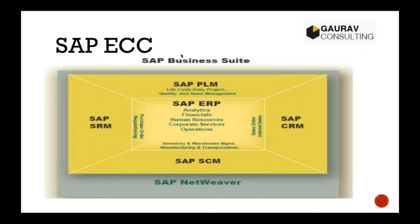SAP ERP is the central component consisting of core modules like MM, SD, FI, and CO. But components like CRM, SRM, SCM, and PLM are not part of the core component — they are available as separate components requiring an interface. The question is: why did SAP provide these as separate components instead of building them inside the main ERP itself like the core modules?